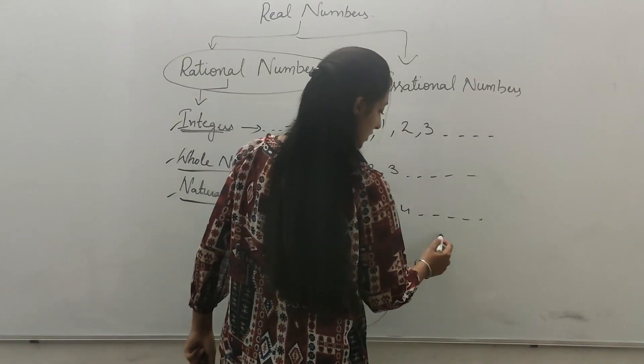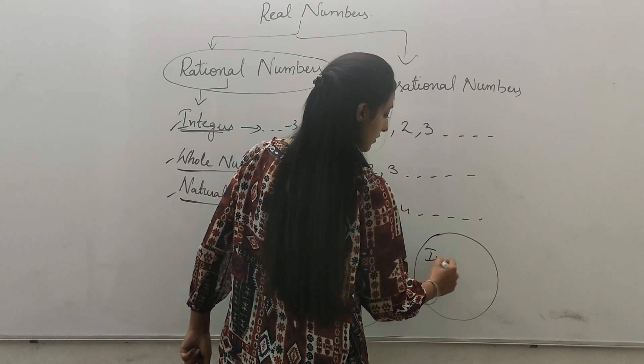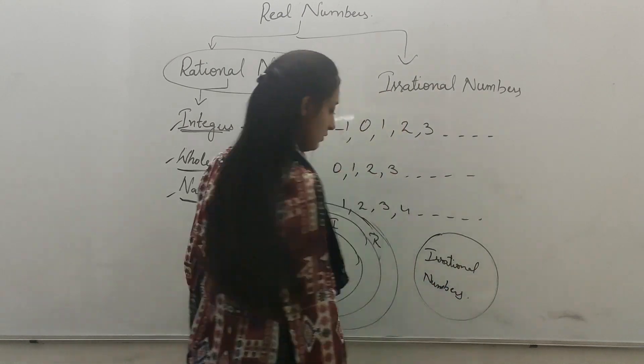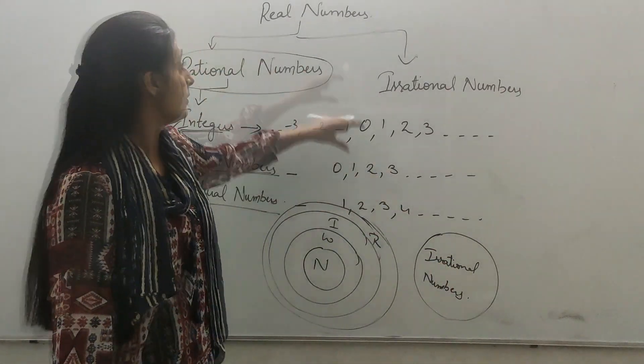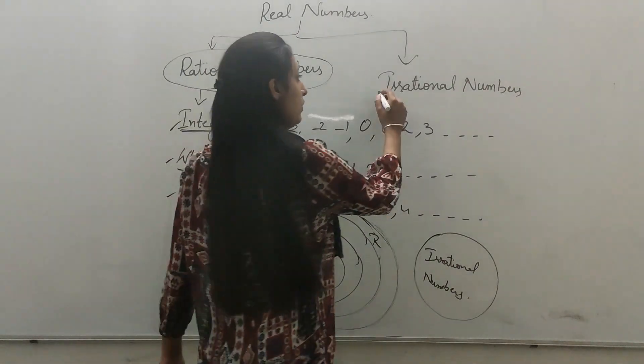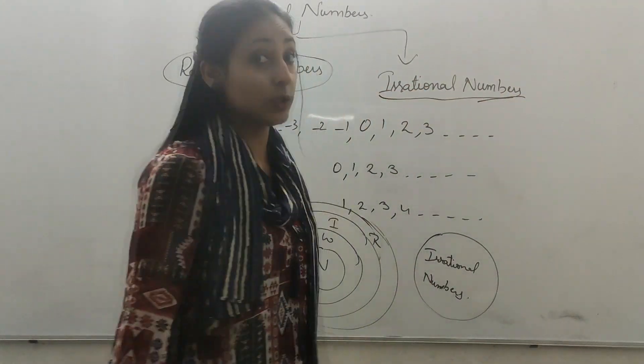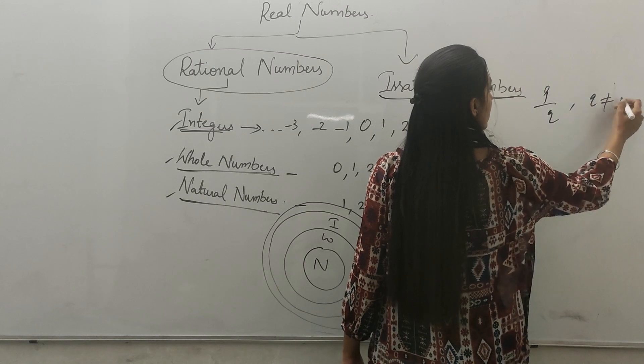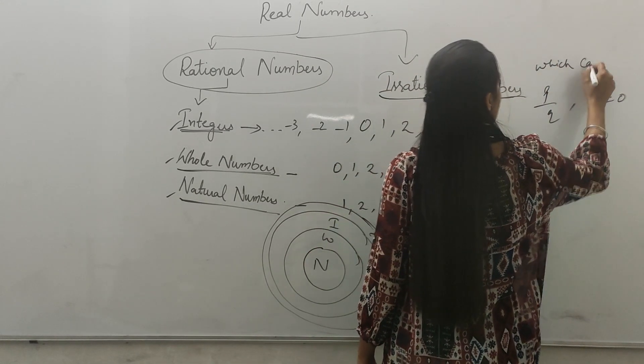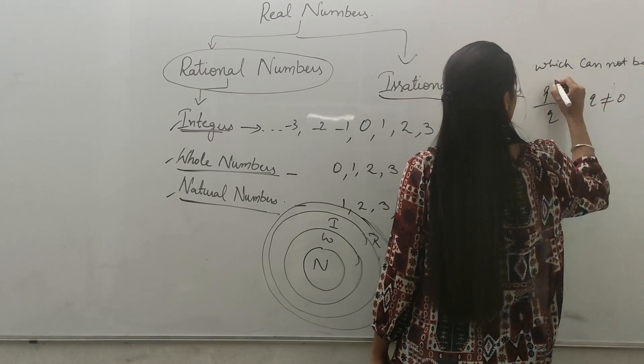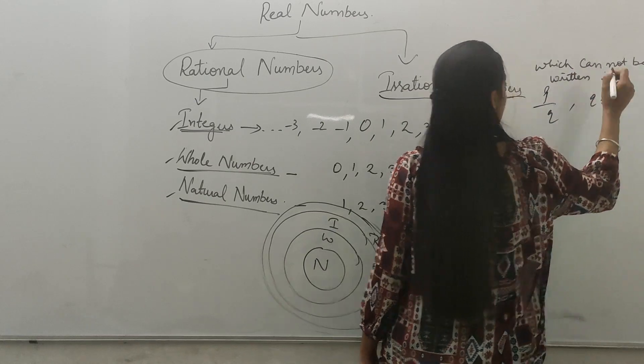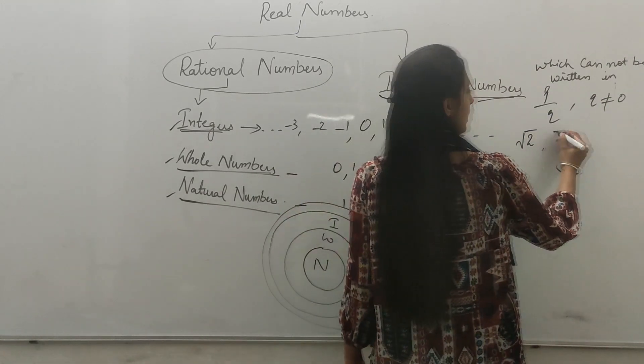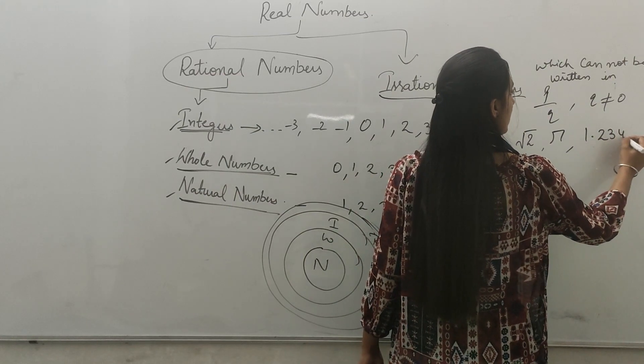And second are the irrational numbers. When we combine both rational and irrational numbers, these become real numbers. And what are the irrational numbers now? Irrational numbers are the numbers which cannot be written in P over Q form, P over Q form, and Q is not equal to zero. Example is two, five, one, two, three, four, five. These are the irrational numbers.